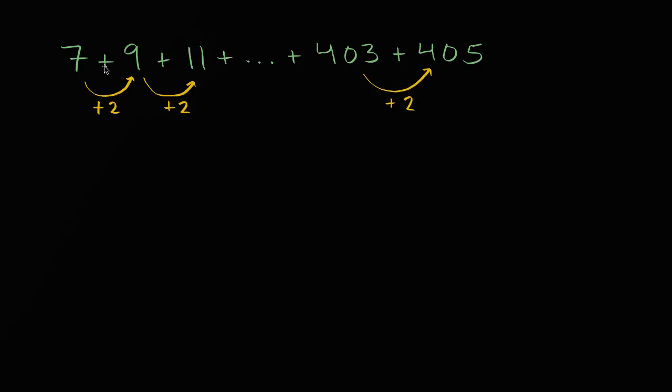So let's think about how many times we have to add 2 to get to 405. So 405 is 7 plus 2 times what? So let me write this down. If we wanted, 405 equals 7 + 2 times, I'll just write 2 times x. I'm just trying to figure out how many times do I have to add 2 to 7 to get to 405.